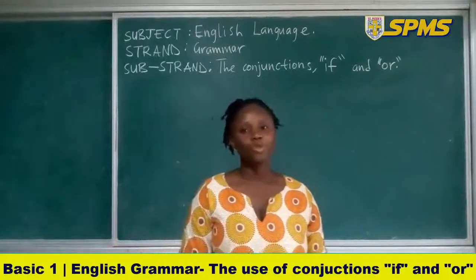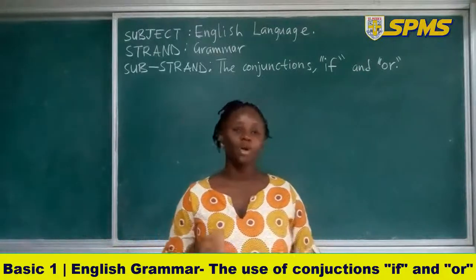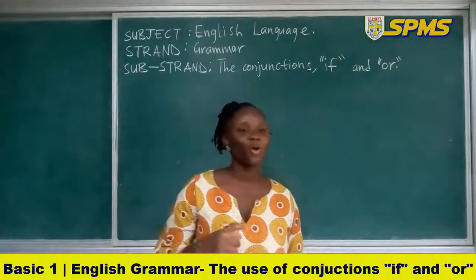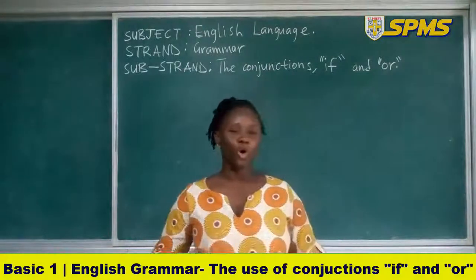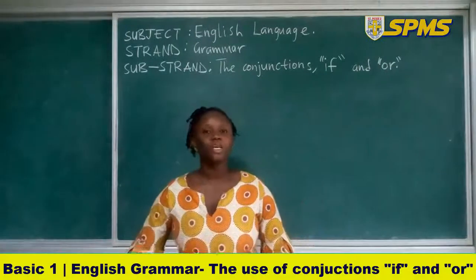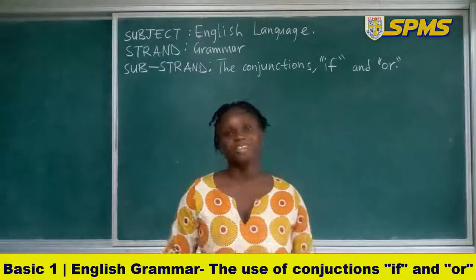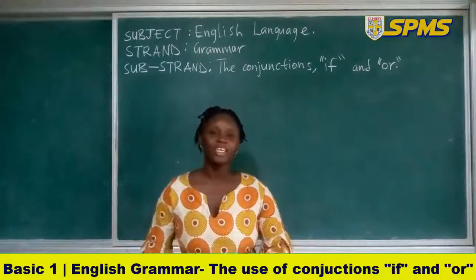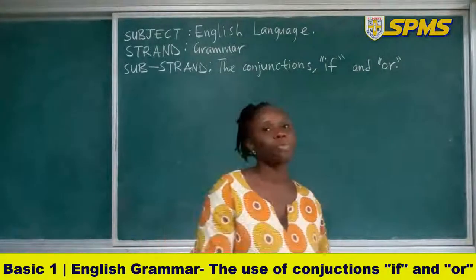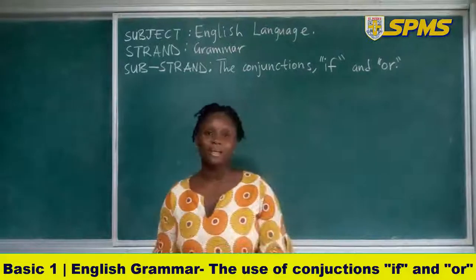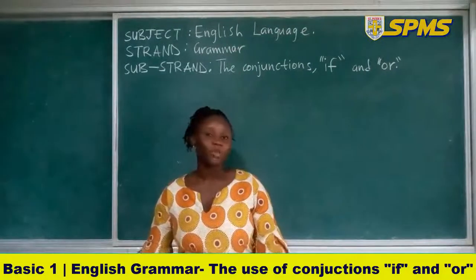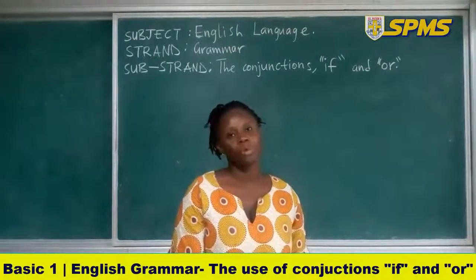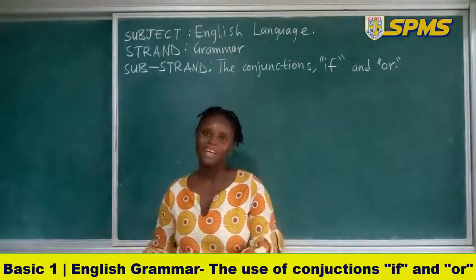We also learned about the conjunction 'or'. The conjunction 'or' is when you have the option to choose between two or more things. For example: you can either eat an apple or a banana — you have the option to either eat an apple or eat a banana.